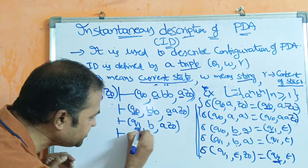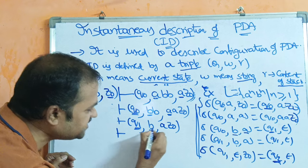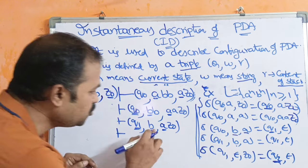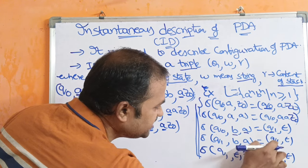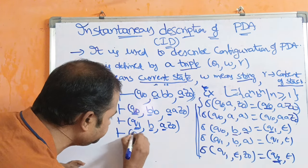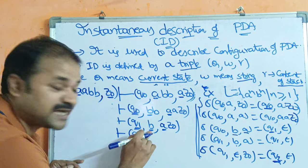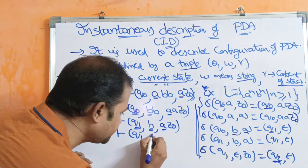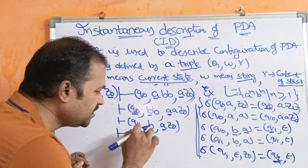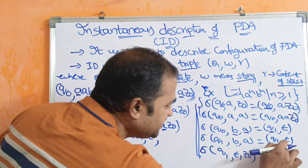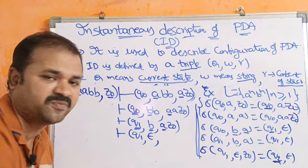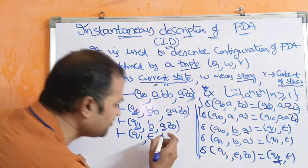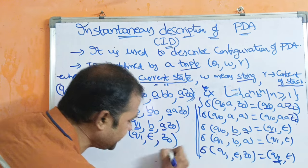Next, the current state is Q1, input symbol is B, and A is the topmost symbol in the stack. So (Q1, BA) means we stay at Q1. This B is completely processed — epsilon denotes end of the string. Epsilon in the stack position means we perform a pop operation, so this A is popped from the stack, leaving Z0 in the stack.